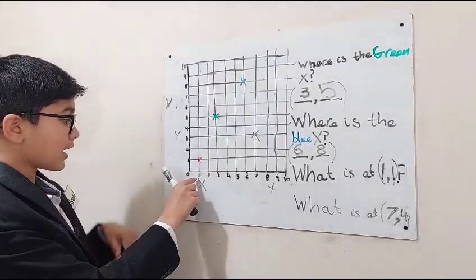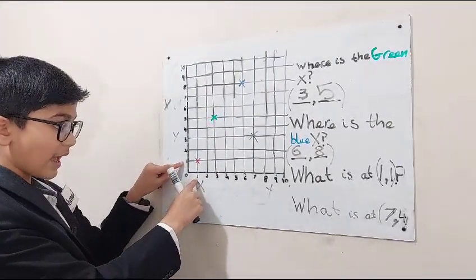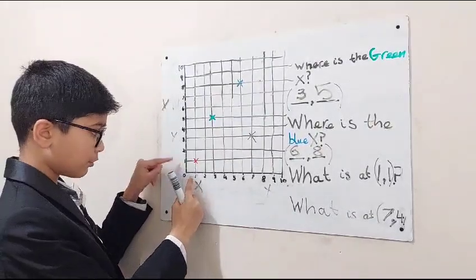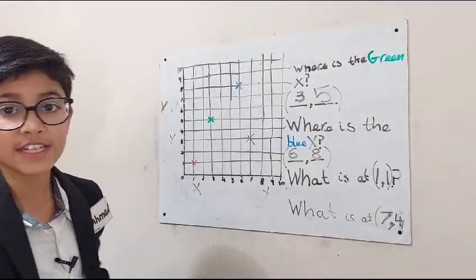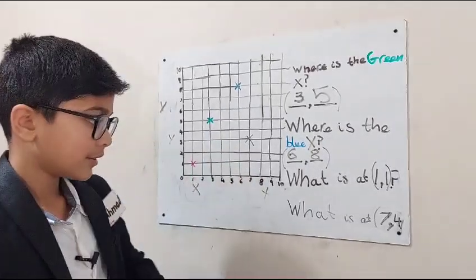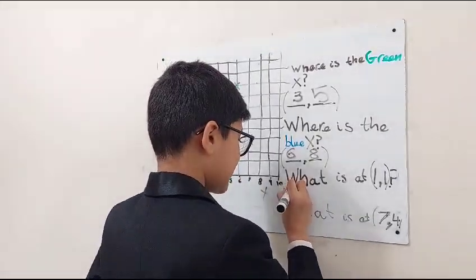So we've got to find one and one. They're here. And we've got to go up to the lines until they meet. There is a red X, so there we can answer red X.